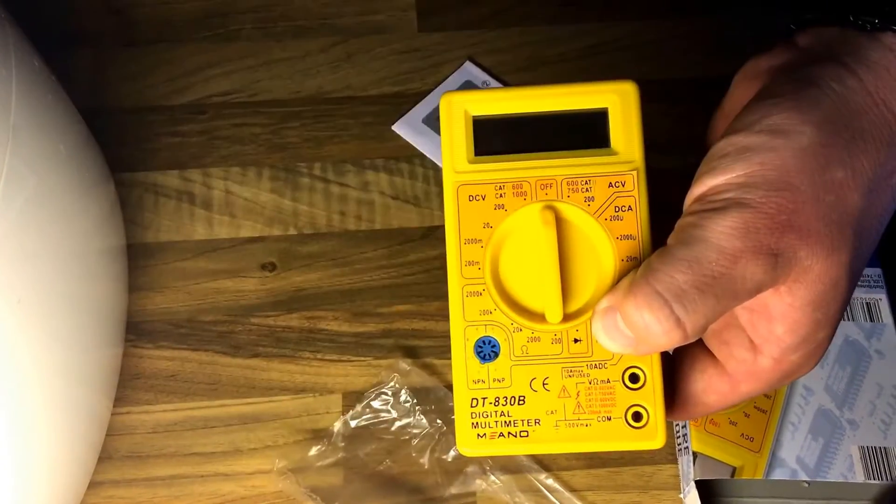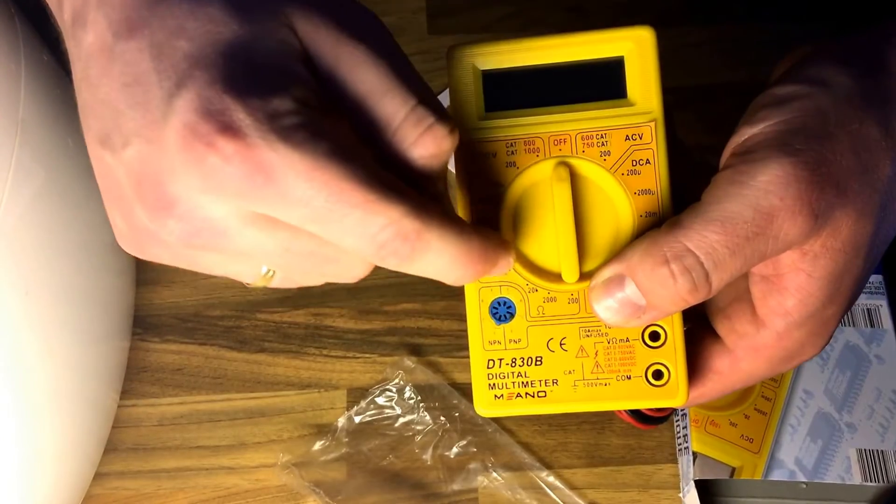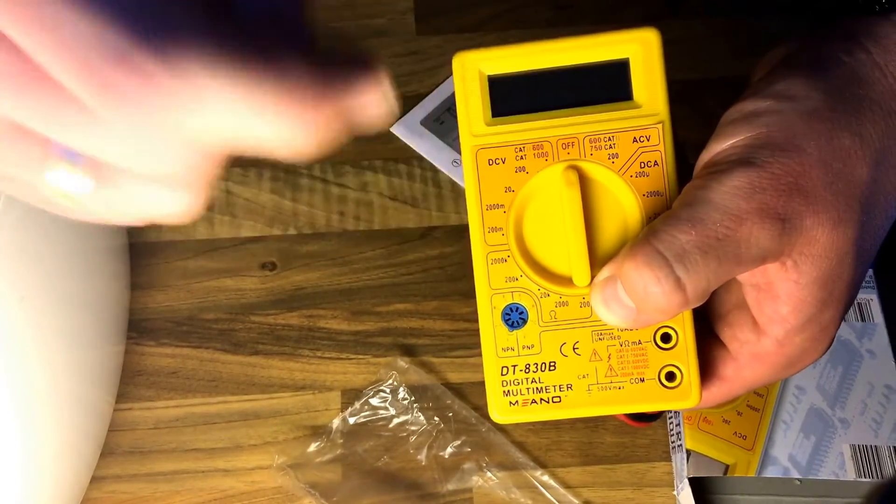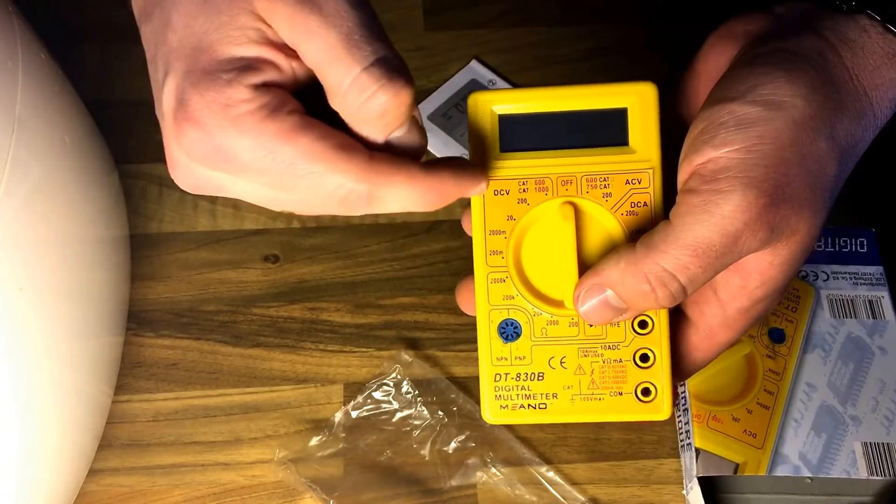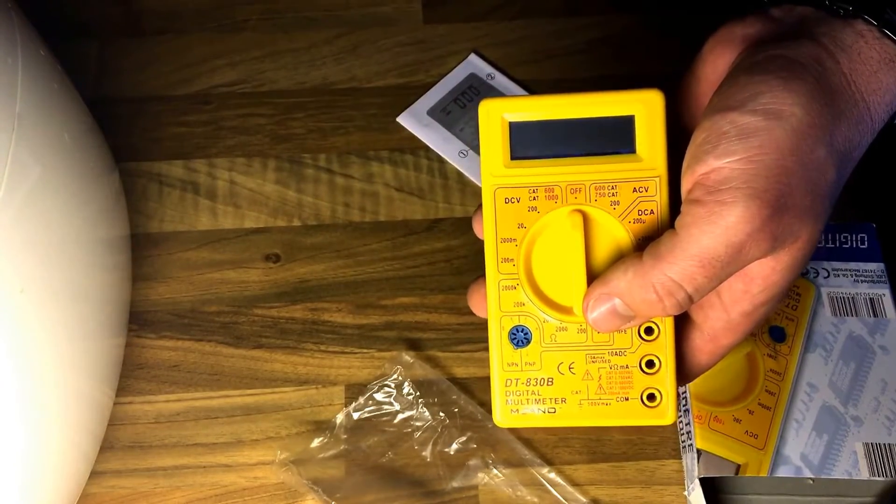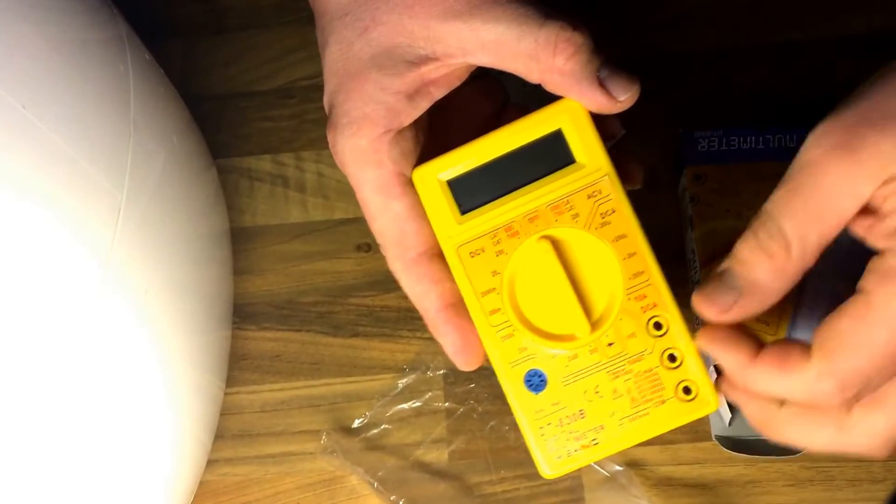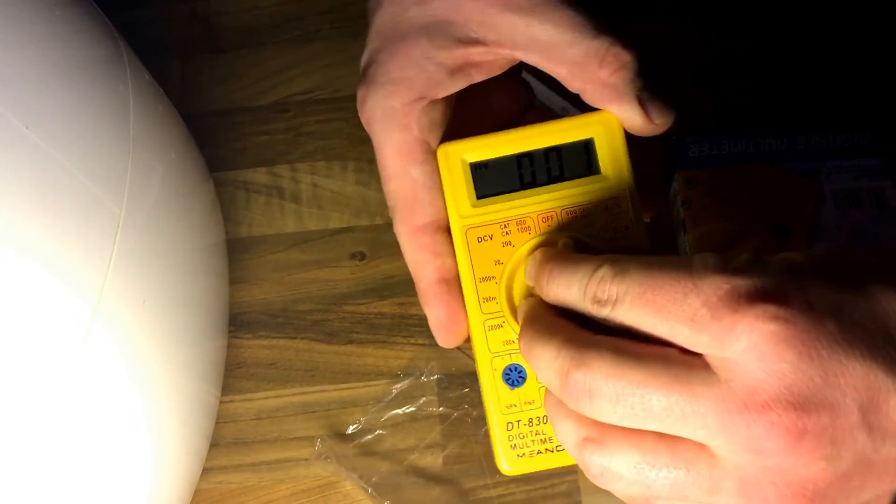This area is for resistance and that area is for DC. Oh, now let's have a function test. Oh, it works! Good job.